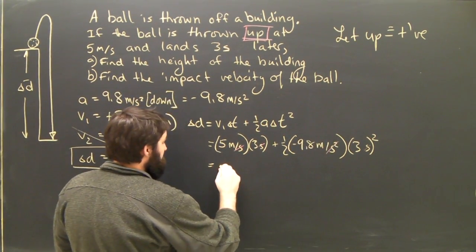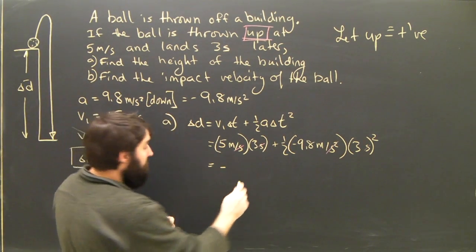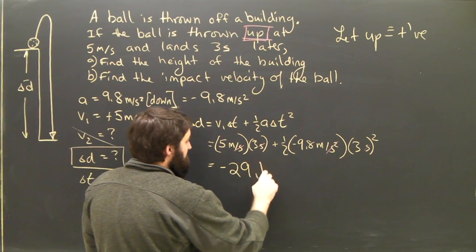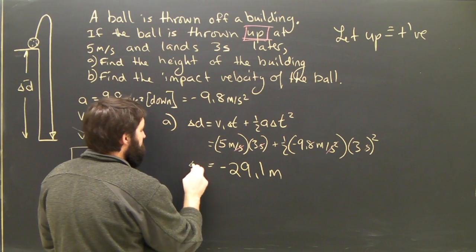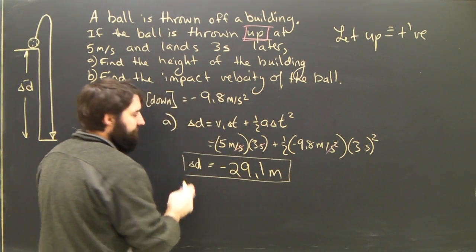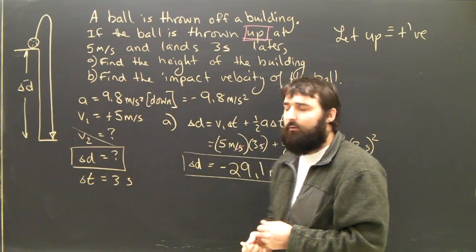Basically, we end up with an answer of negative. It's going to be 15 minus all this stuff. It's going to be negative 29.1 meters. What does that mean?